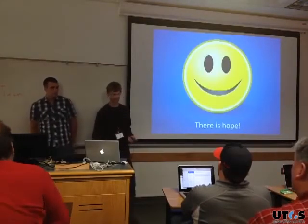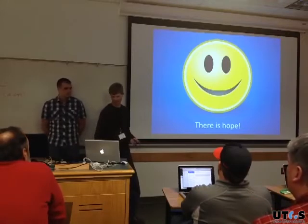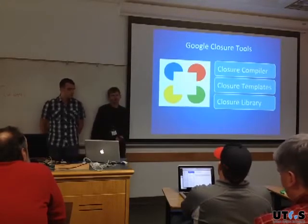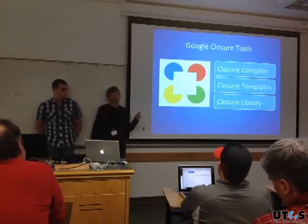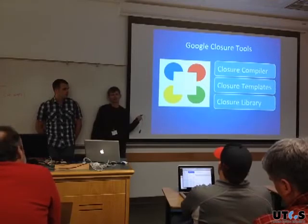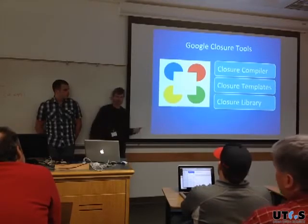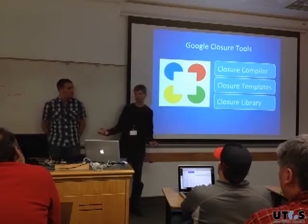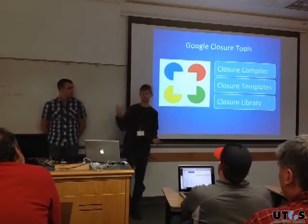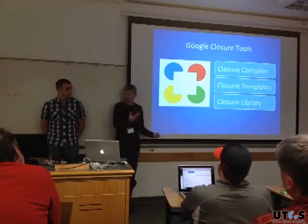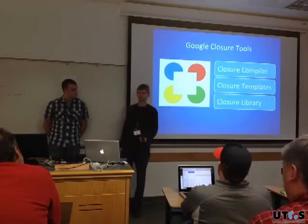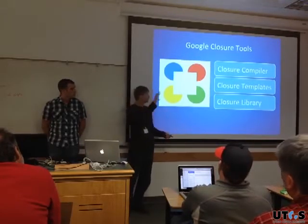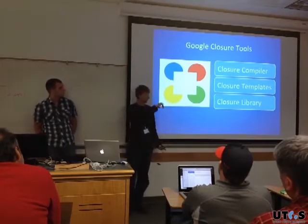But there's hope — things we can do to get over these challenges. We're going to talk specifically about Google Closure Tools, an open source project that Google created internally and open sourced about two years ago at Google I/O. Google realized they were going to be creating a whole bunch of web applications — Gmail, Google Docs, Reader — and seeing the limitations of JavaScript, they put together this project to overcome them. The Google Closure Toolset has three pieces: the Closure Compiler, Closure Templates, and the Closure Library.